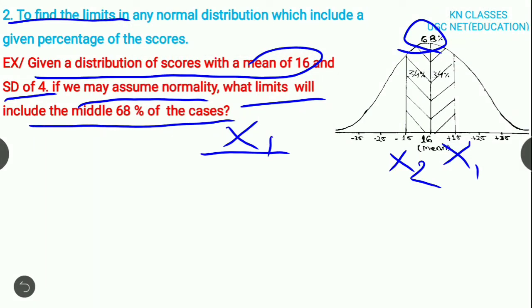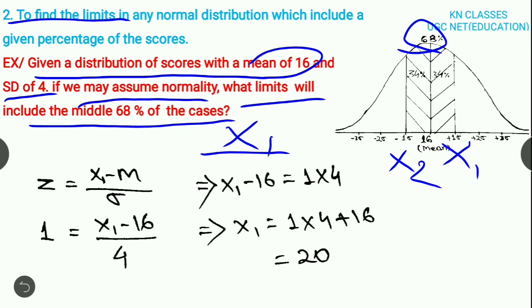So here use the formula of Z score. Z equals X minus mean divided by standard deviation. We have to find out Z value 1. The Z value which gives 34% is 1.